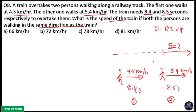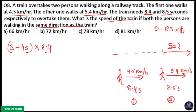Here, all three objects are moving in the same direction. In the first case, distance covered is equal to the speed of the train minus the speed of the first person — that is S minus 4.5 — because both are moving in the same direction. Into time taken by the train to overtake the first person, which is 8.4 seconds. I will convert it to hours by dividing by 3600, since the answer is in kilometers per hour.